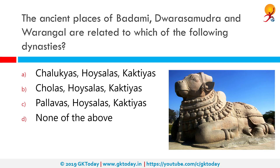The ancient places of Badami, Dwarasamudra and Warangal are related to which of the following dynasties? The correct answer is Chalukyas, Hoysalas and Kakatiyas respectively. The Chalukya dynasty was an Indian royal dynasty that ruled large parts of southern and central India between the 6th and 12th centuries. The Hoysala empire was a Kannadiga power that ruled most of what is now Karnataka between the 10th and 14th centuries. The Kakatiya dynasty was a South Indian dynasty whose capital was Orugallu, now known as Warangal.